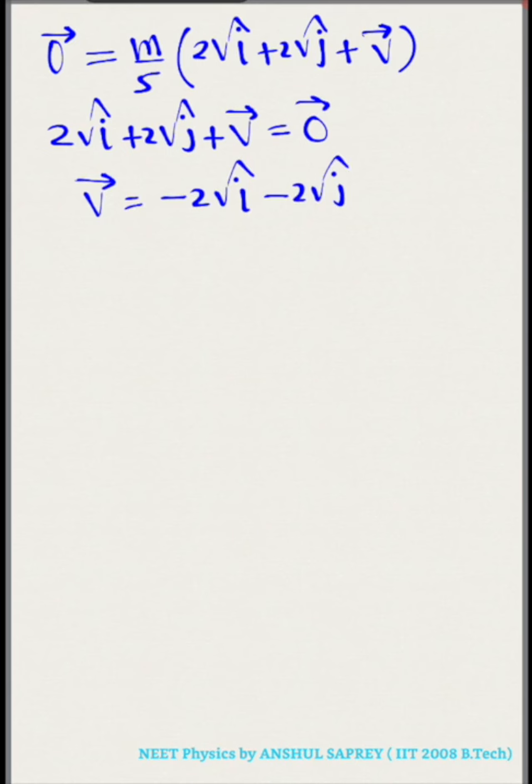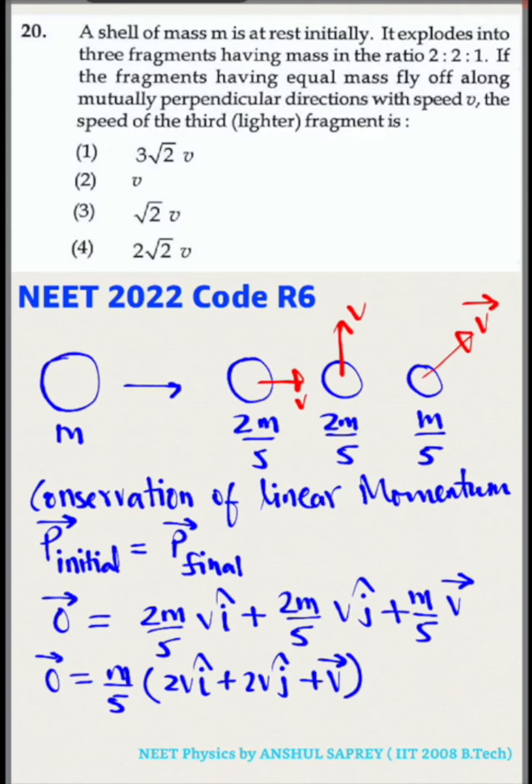The magnitude of v vector is equal to square root of (2v)² + (2v)², which will be √2 times 2v. So the answer is 2√2 v. The correct option is fourth.